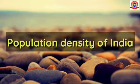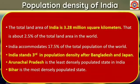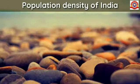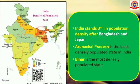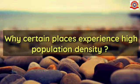The total land area of India is 3.28 million square kilometers, which is about 2.5 percent of the total land area in the world. India accommodates 17.5 percent of the total world population. India stands third in population density after Bangladesh and Japan. Arunachal Pradesh is the least densely populated state in India, whereas Bihar is the most densely populated state.